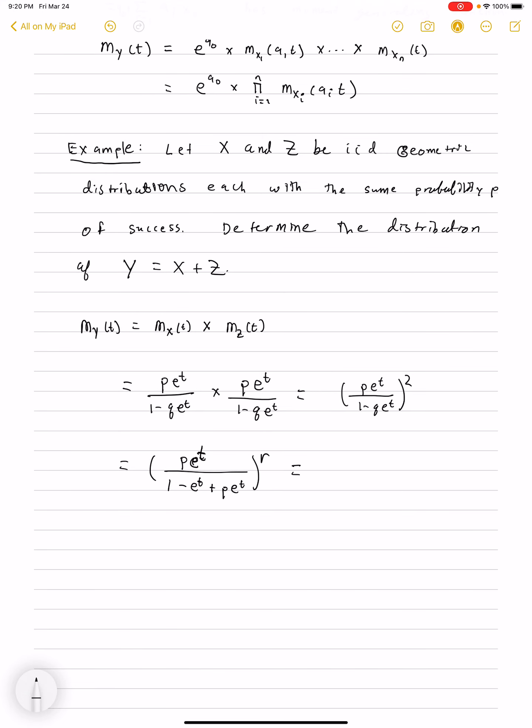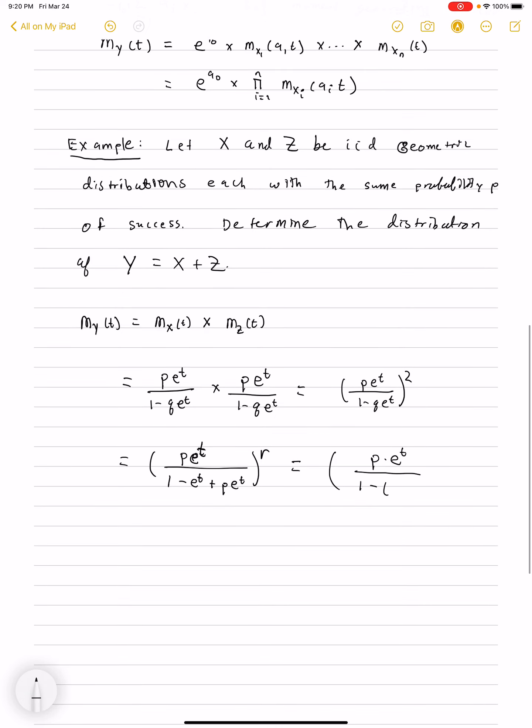We just need to do some algebraic manipulations here. This looks like it's p times e^t divided by 1 minus, and just doing some algebra here in the denominator, they each have a factor of e^t. So I think it will factor as (1 minus p) e^t squared, or excuse me, to the rth power. And that's just algebra. If we factor that out, we'll see that we get exactly the same thing.